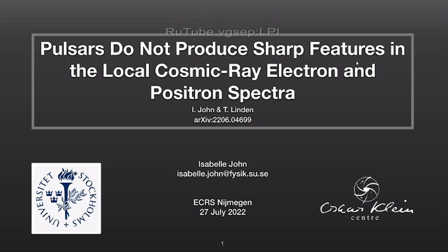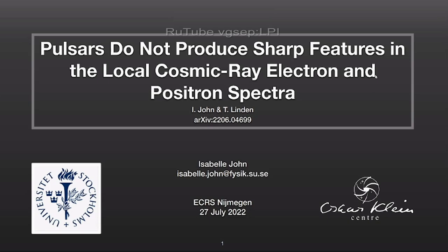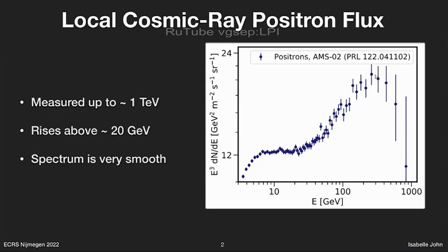For the past decade or so, we thought that pulsars could produce sharp spectral features in the local cosmic ray electron and positron spectrum. I'm going to show that this is not the case. This is the local cosmic ray positron flux as measured by the AMS-02 experiment, which currently gives us the most precise cosmic ray data. There are two noticeable things: above about 20 GV, we have a rise in the positron flux called the positron excess, and this flux is actually very smooth — which is important to keep in mind.